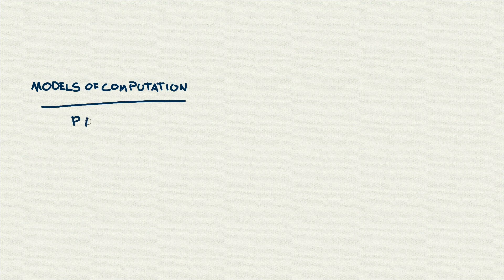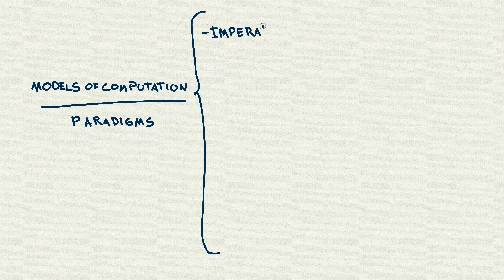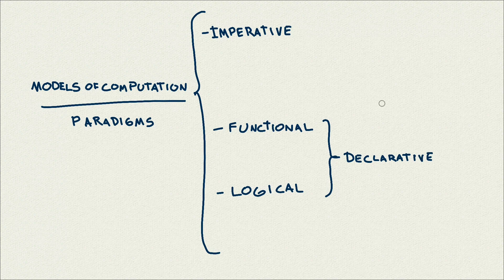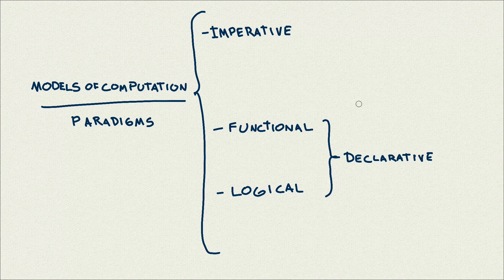Traditionally, programming languages can be divided into different models of computation or paradigms, and these paradigms include the imperative, functional, and logical models. We will talk about functional and logical in other videos, and they are basically also subcategorized in what is called declarative models. In those models, you tell the computer more about what you want instead of how you want to implement it. Opposed to this is the imperative model, where you basically program by setting up a set of commands or statements to change the programming state in order to get the result that you want — focusing more on the how.